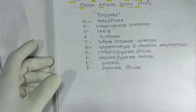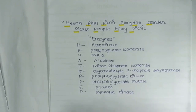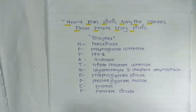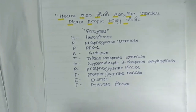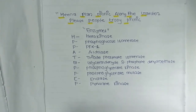Now for the enzymes, here is another mnemonic: 'In A Plant Picnic Along The Garden Please People Enjoy Picnic.' The initial letters represent the enzymes — H represents hexokinase, P represents phosphoglucose isomerase, another P represents PFK1, A represents aldolase, T represents triose phosphate isomerase, G represents glyceraldehyde-3-phosphate dehydrogenase, P represents phosphoglycerate kinase, another P represents phosphoglycerate mutase, E represents enolase, and P represents pyruvate kinase.